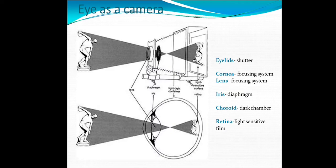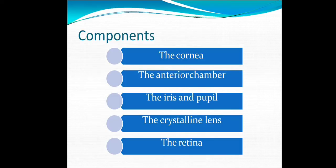Eye as a camera: eyelids act as a shutter, cornea acts as a focusing system, lens as a focusing system, iris as a diaphragm, choroid as a dark chamber, and retina as a light-sensitive film. The components are the cornea, the anterior chamber, iris and the pupil, the crystalline lens, and the retina.